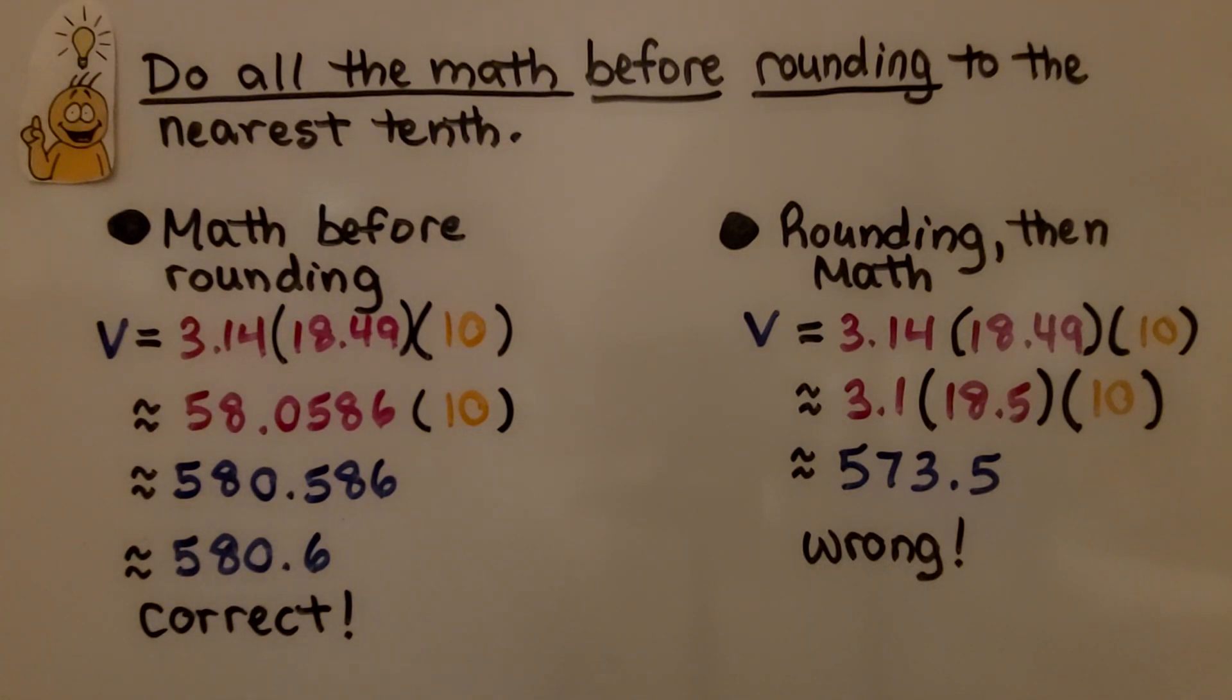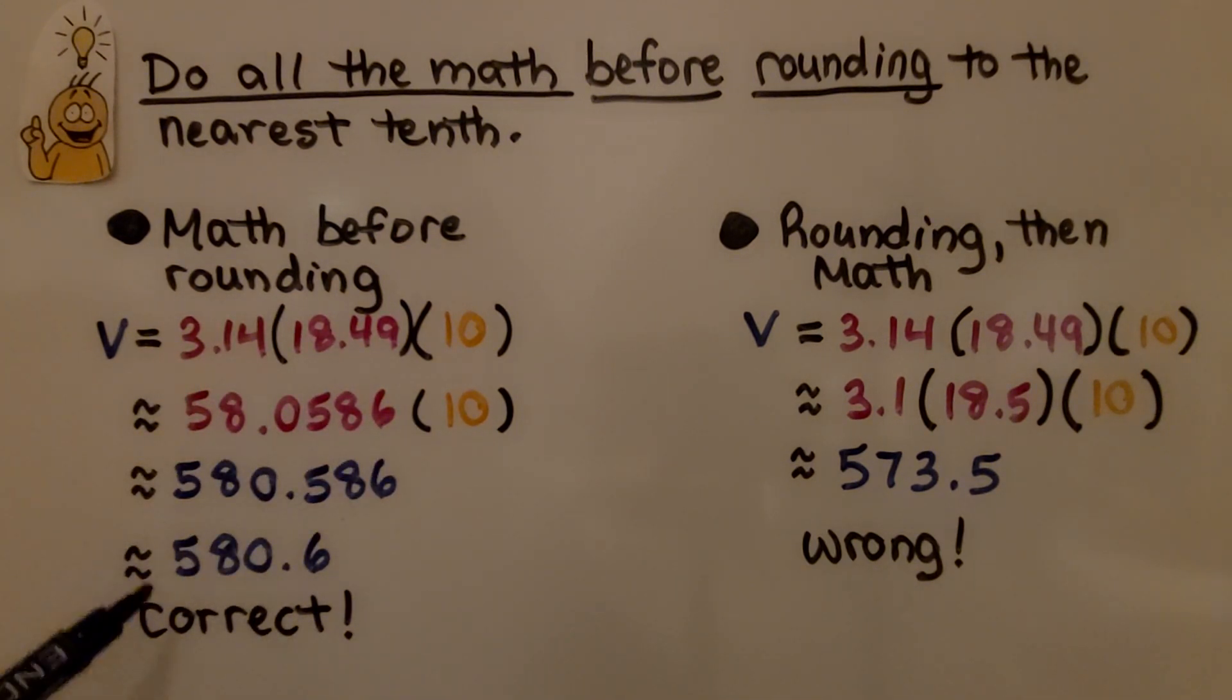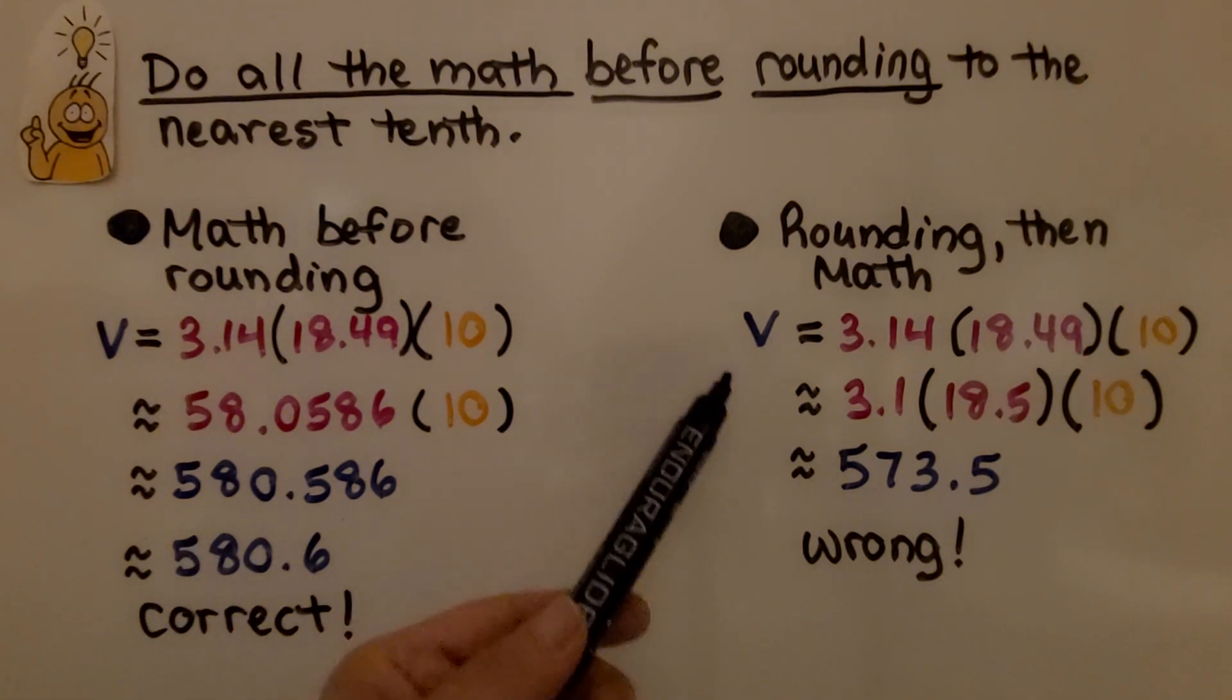Now I want you to keep in mind to do all the math before rounding to the nearest tenth. When we do the math before rounding it to the nearest tenth, we multiply by all those decimal values and we'll get the correct answer.